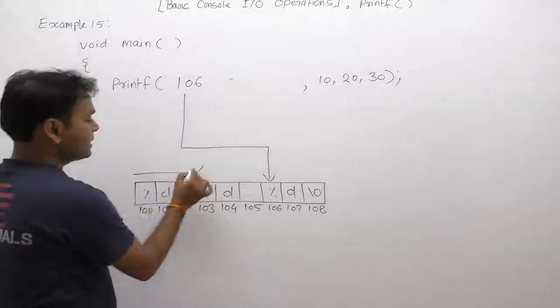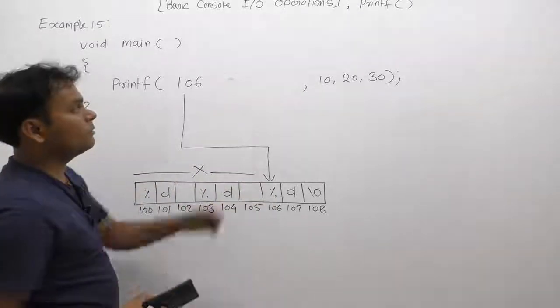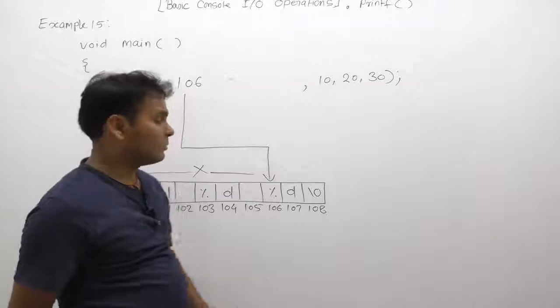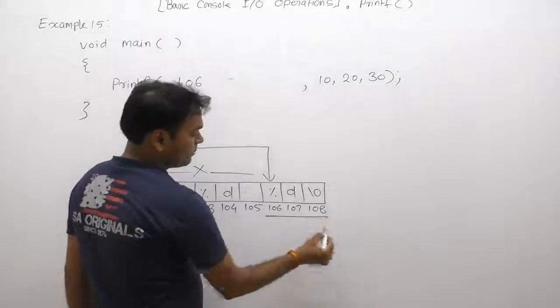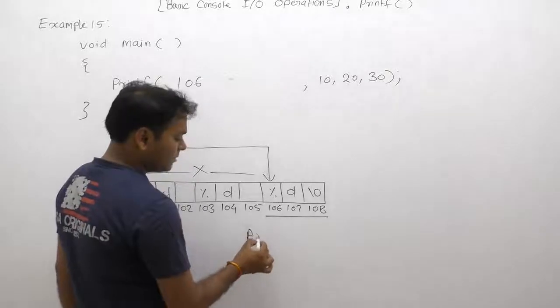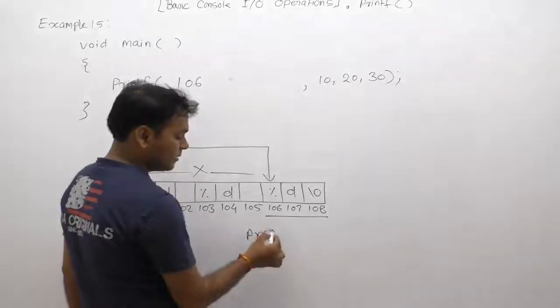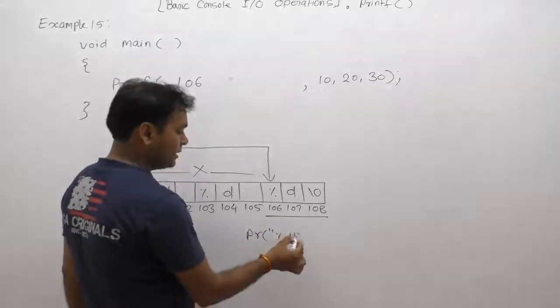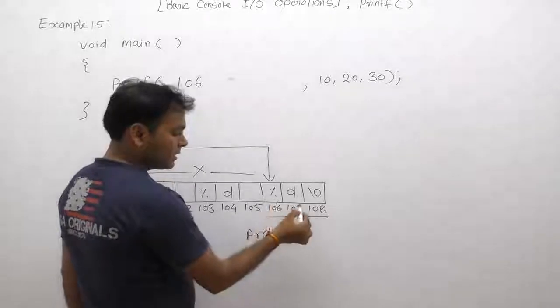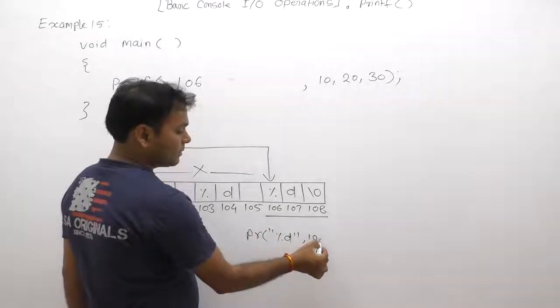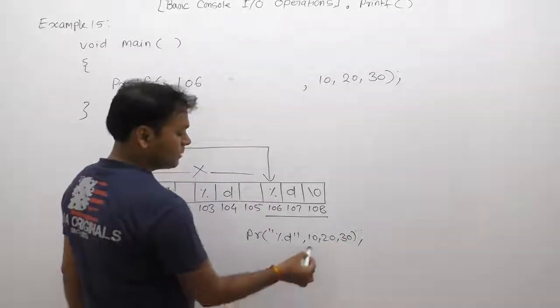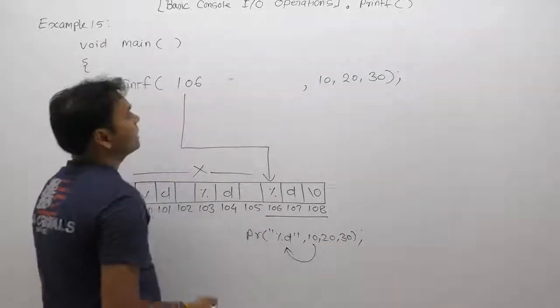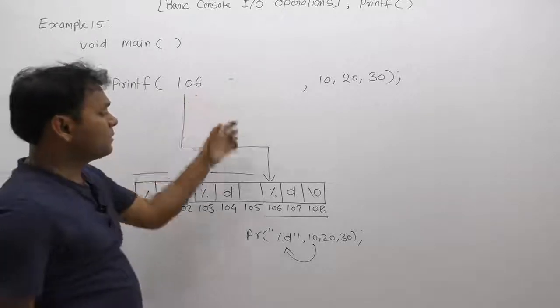Therefore this part is skipped by printf because of arithmetic. It will read the data or consider data from that place onwards. It is similar to like that: printf becomes like that %d logically space bar only %d. Then we are supplying 10, 20, 30. According to that, printf result is only 10.